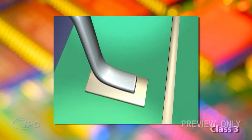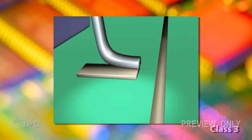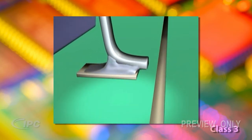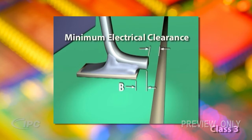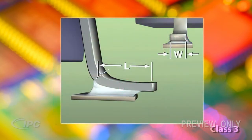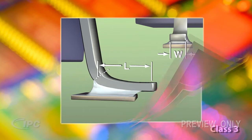Tow Overhang for Gullwing leads that have a long foot length is allowed, as long as the overhang does not violate minimum electrical clearance. A long foot length is when the foot, or Dimension L, is greater than 3 lead widths, or Dimension W.